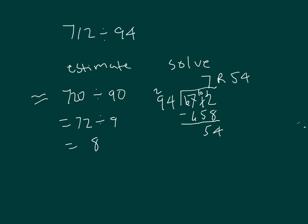Let's run a check. That's 94 times 7: 7 times 4 is 28, regroup of 2. 7 times 9 is 63, plus 2 is 65. Add back in the 54, and we get 712. So 712 divided by 94 is equal to 7 with the remainder of 54.